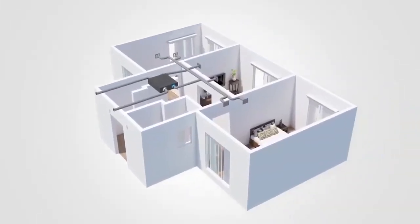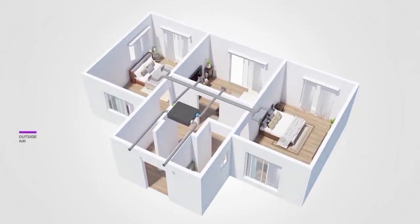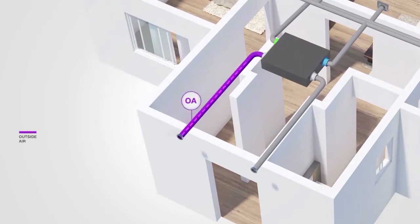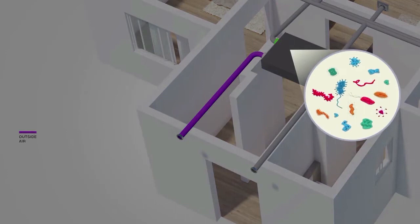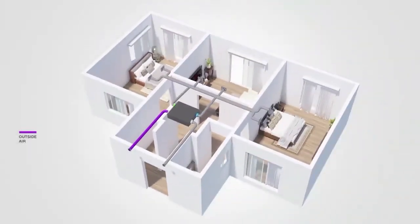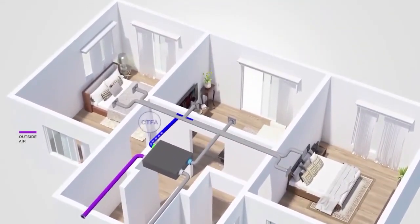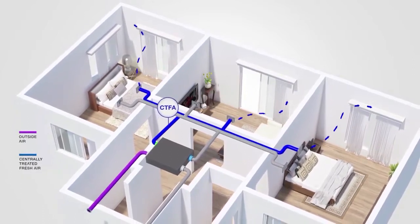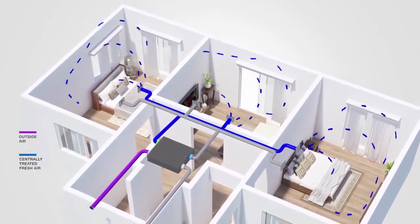The polluted outside air flows in. The polluted air then gets filtered completely and kills even the smallest germs. It releases centrally treated fresh air in all the rooms for you to breathe fresh oxygen.